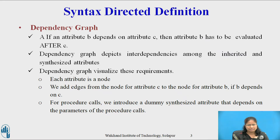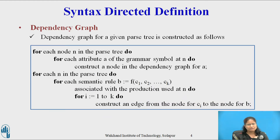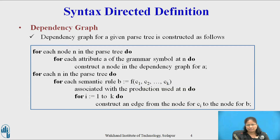For a procedure call, we introduce a dummy synthesized attribute that depends on the parameters of the procedure call. The Dependency Graph for a given parse tree is constructed as follows: for each node N in the parse tree, for each attribute A of the grammar symbol at N, construct a node in the dependency graph for A. Then for each node N and each semantic rule B = F(C1, C2, ..., CK) associated with the production used at N, for i = 1 to K, construct an edge from the node for Ci to the node for B.